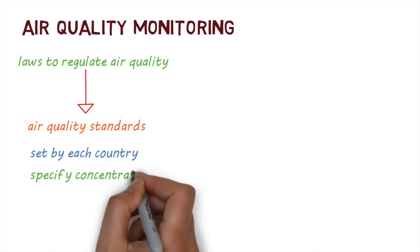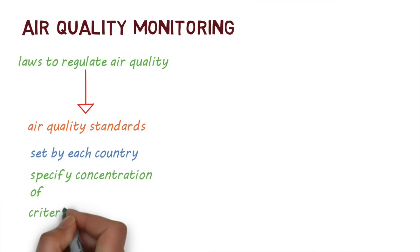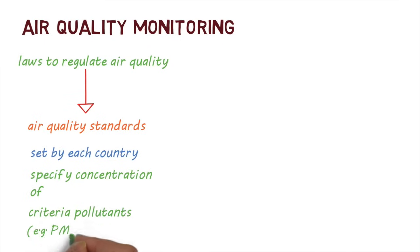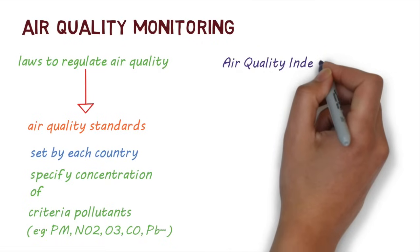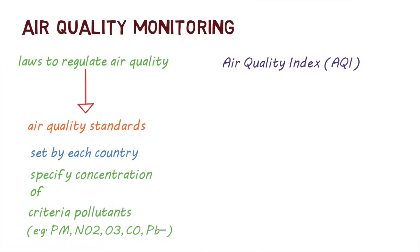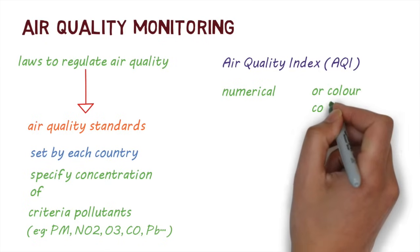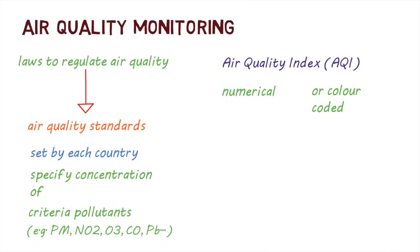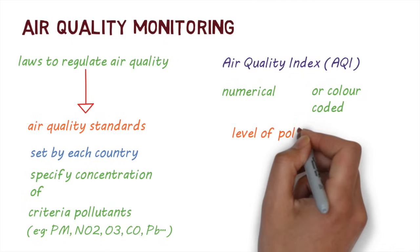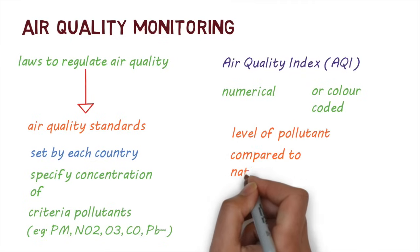These standards specify the concentration of a number of selected pollutants, called criteria pollutants, that are allowed in the air. A useful way to track air pollution against the national standards is a measure called the Air Quality Index, AQI. This is a simple numerical or color-coded representation of how clean the air is. There are different ways of calculating the AQI, but it's essentially a measure of what the level of a pollutant is compared to what the national standard is.